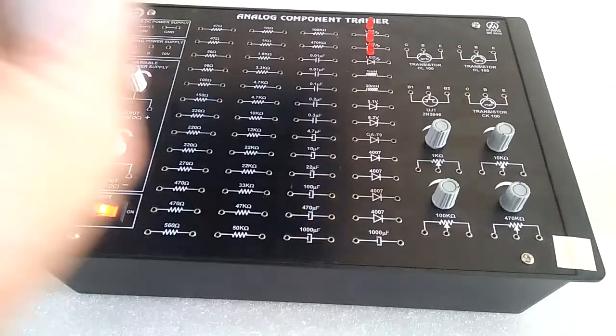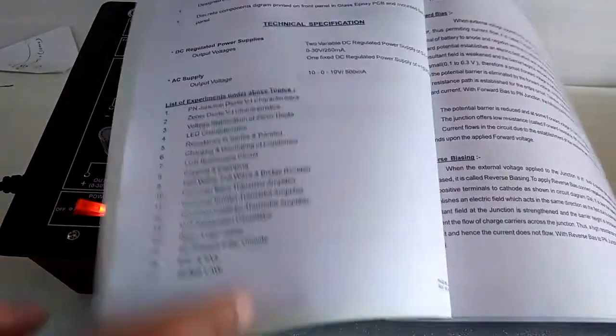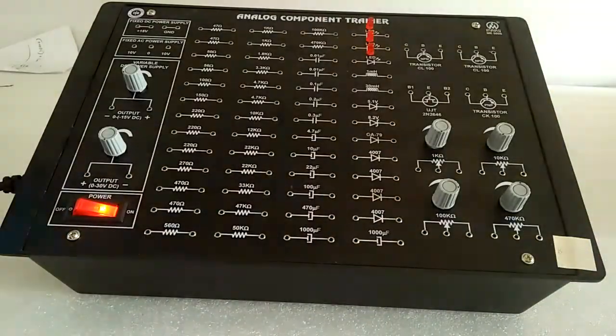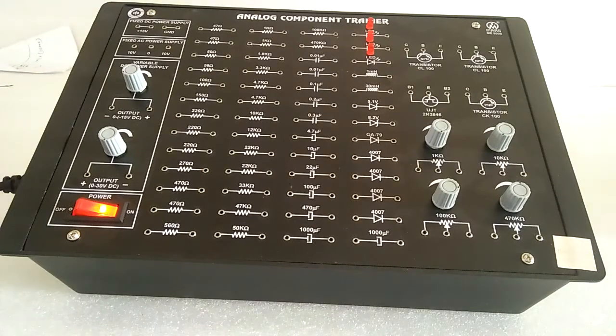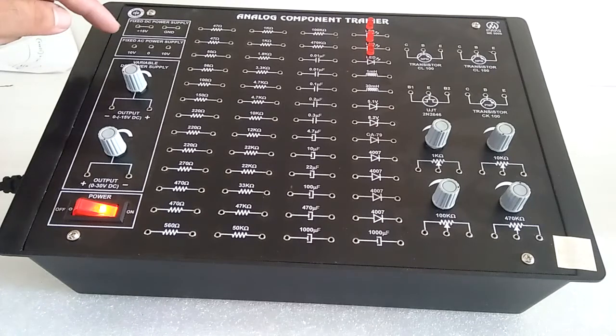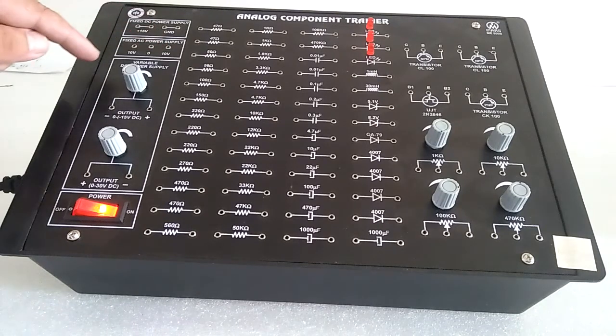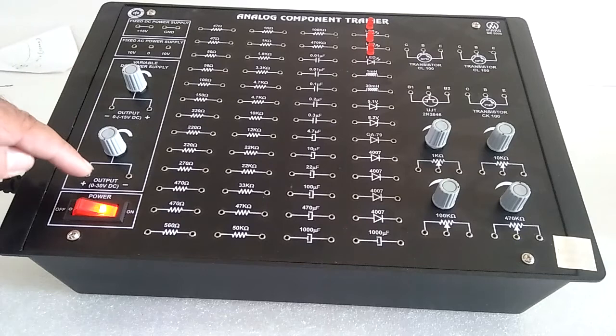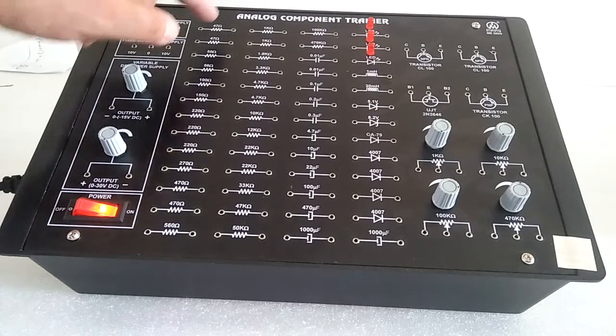Here we have the list of experiments in the manual. Here we have plus 15 volt and ground fixed, 10 and 0 to 10 DC supply, variable DC supply 15 volt and 0 to 30 volt, on-off switch, and all are the components with brought out connections.